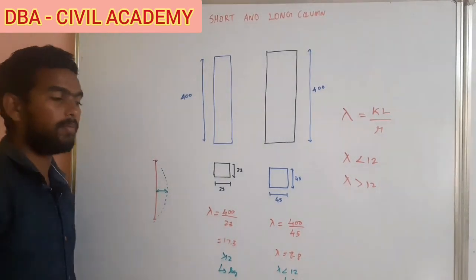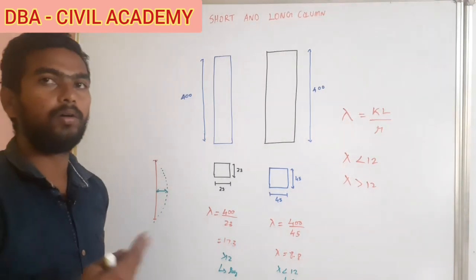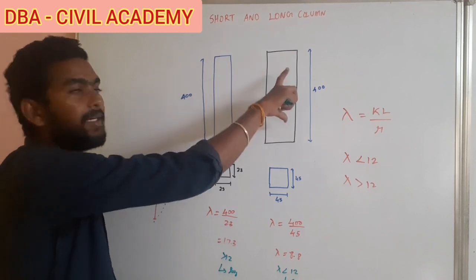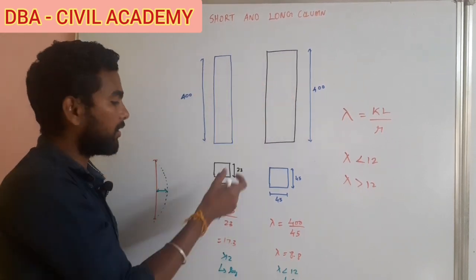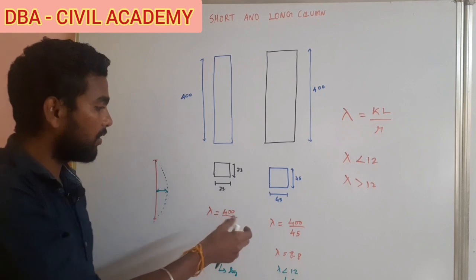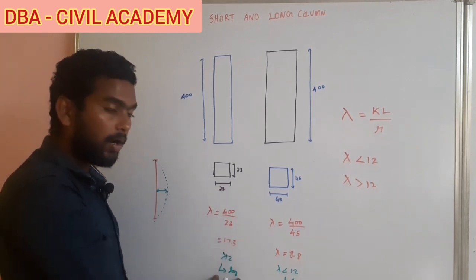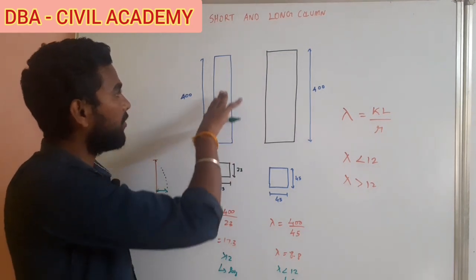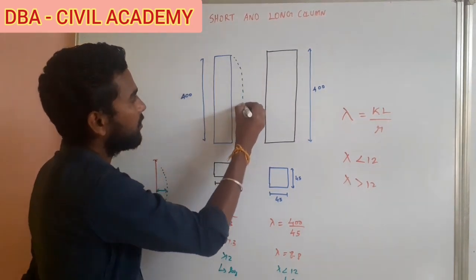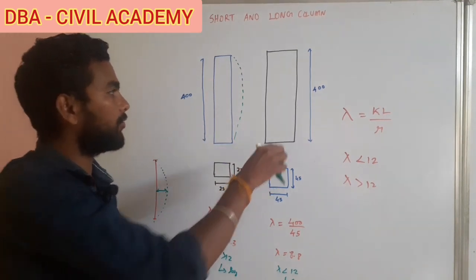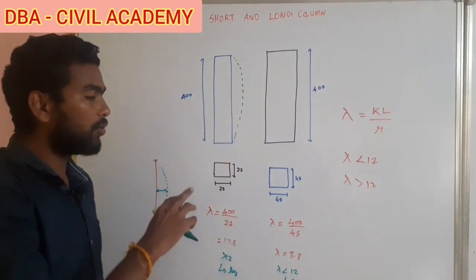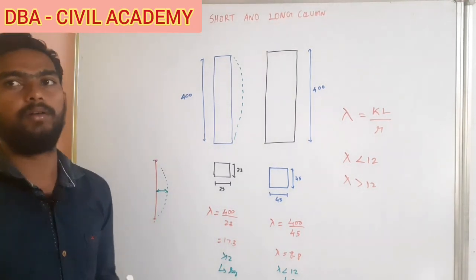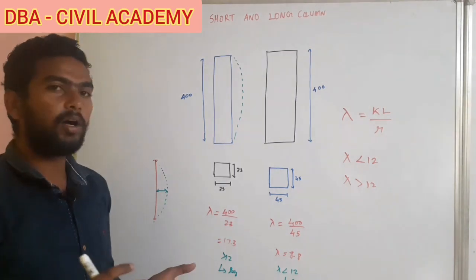So, a long column is also called a slender column. Both cases have the same height of 4 meters, but the cross-sections differ. The column with the smaller cross-section becomes a long column prone to buckling, while the larger cross-section becomes a short column. Short column has the advantage.